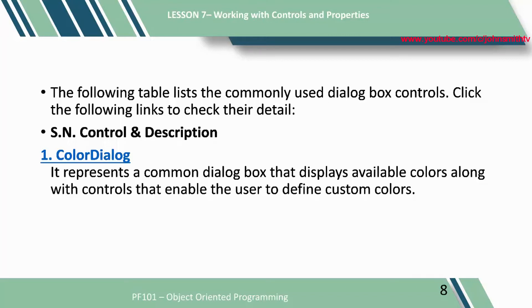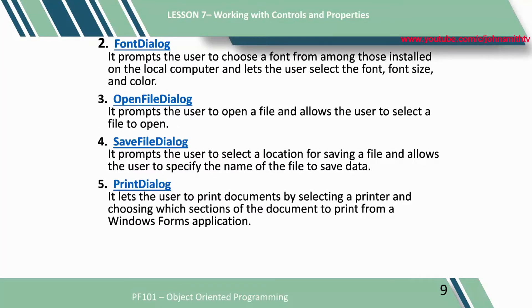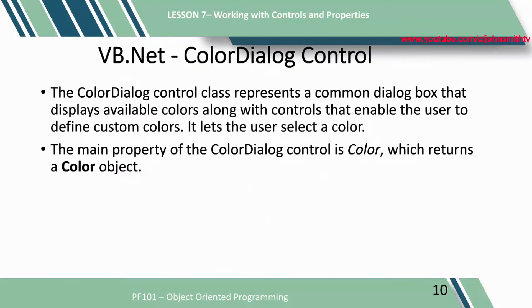The following lists the commonly used dialog box controls: 1. Color dialog — represents a common dialog box that displays available colors, along with controls that enable the user to define custom colors. 2. Font dialog — prompts the user to choose a font from among those installed on the local computer, and lets the user select the font, font size, and color. 3. Open file dialog — prompts the user to open a file and allows the user to select a file to open. 4. Save file dialog — prompts the user to select a location for saving a file and allows the user to specify the name of the file to save data. 5. Print dialog — lets the user print documents by selecting a printer and choosing which sections of the document to print from a Windows Forms application.